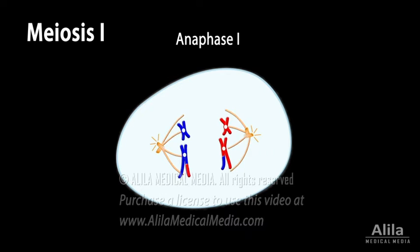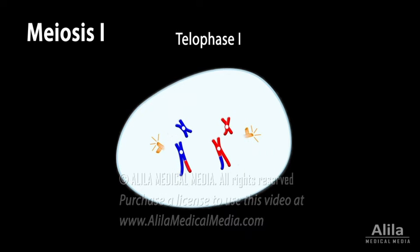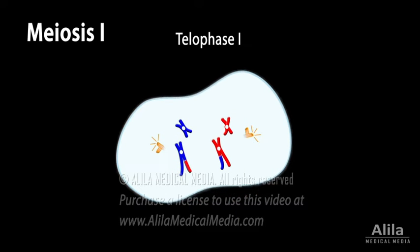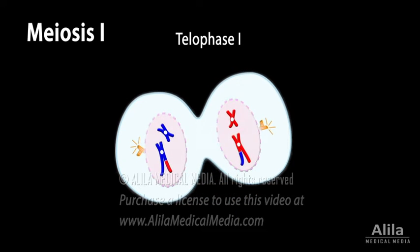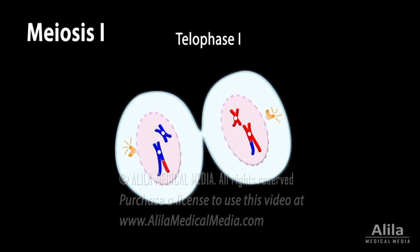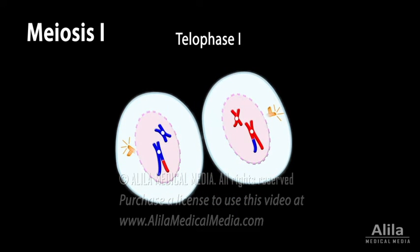In telophase 1, new nuclear envelopes form and the cell undergoes cytoplasmic division called cytokinesis. The resulting daughter cells are haploid, but each of their chromosomes still consists of two chromatids.